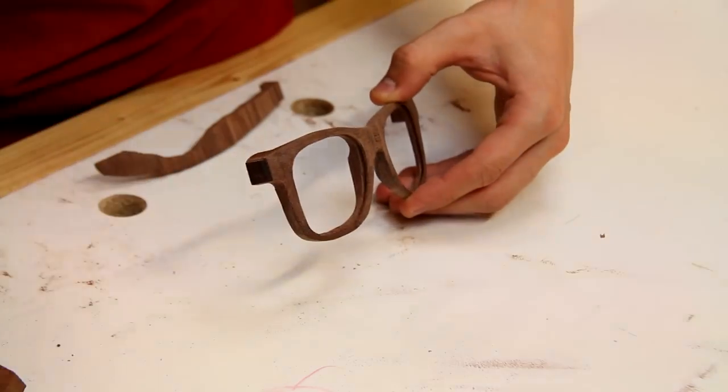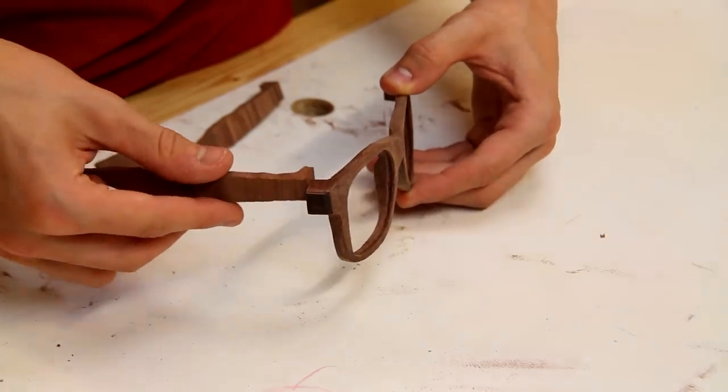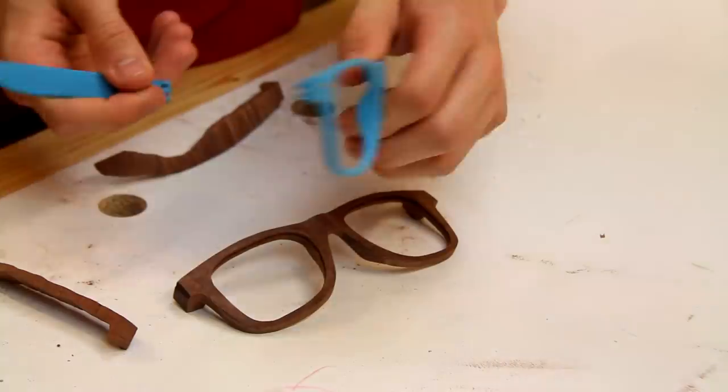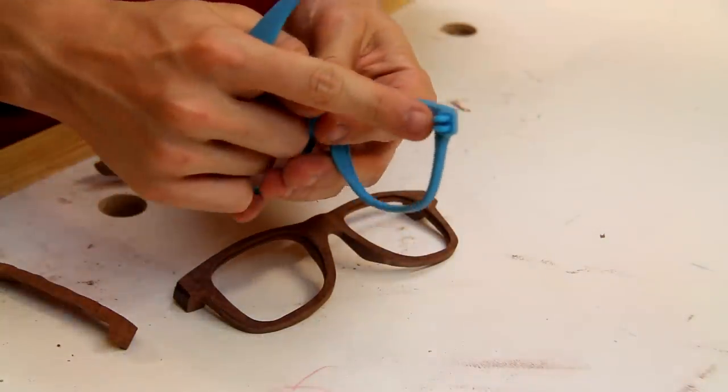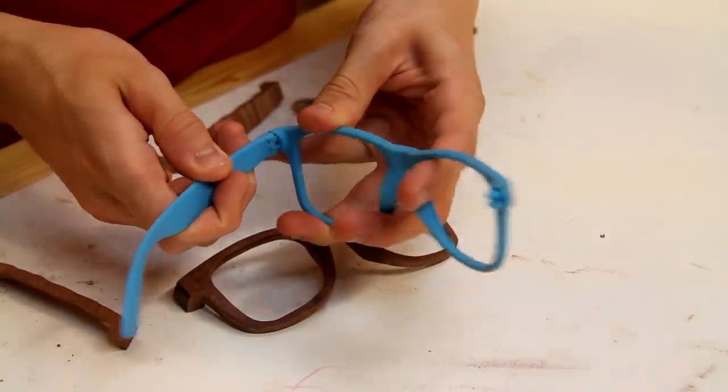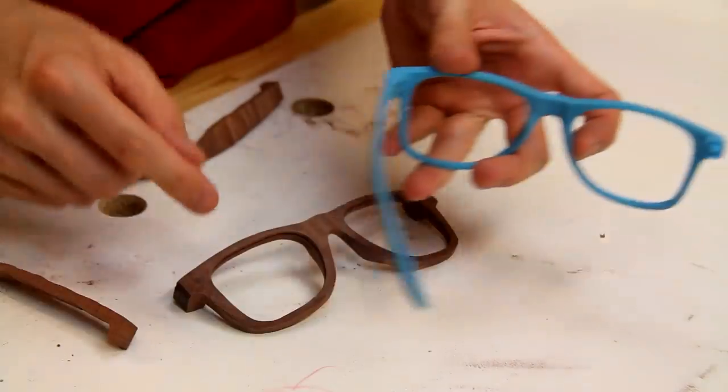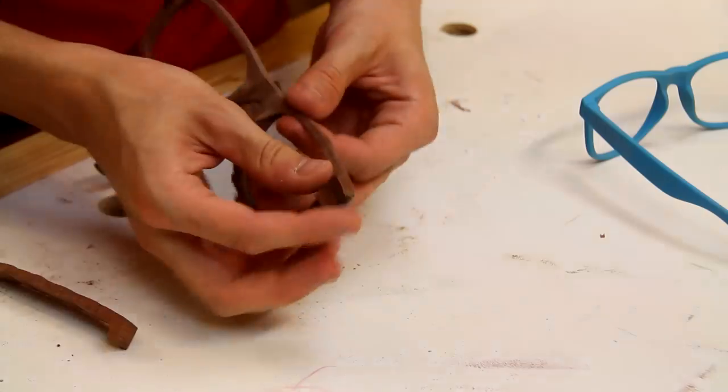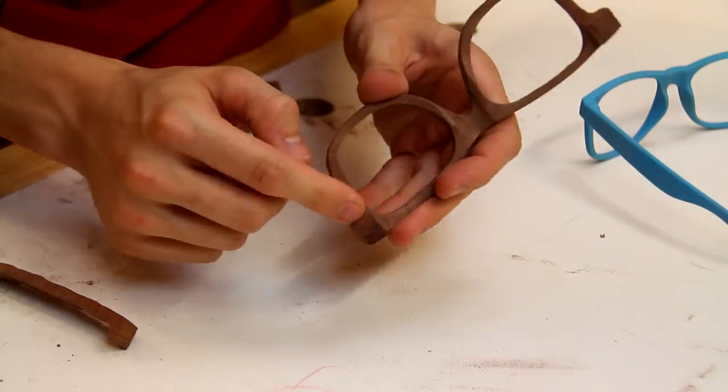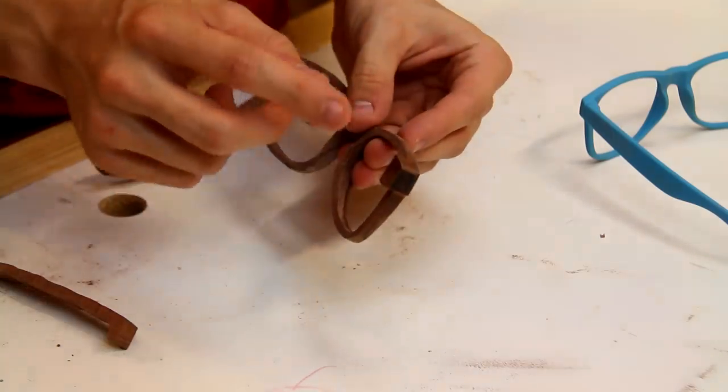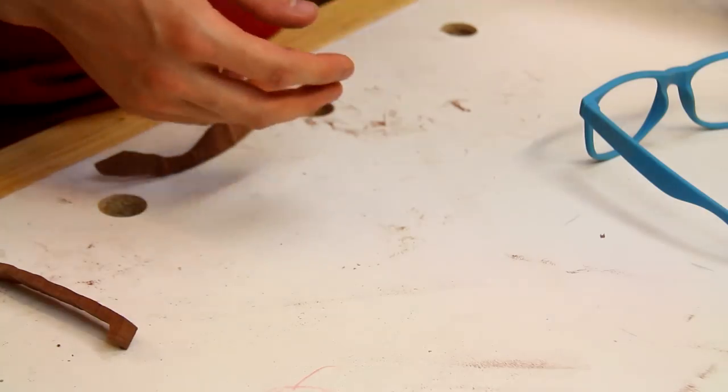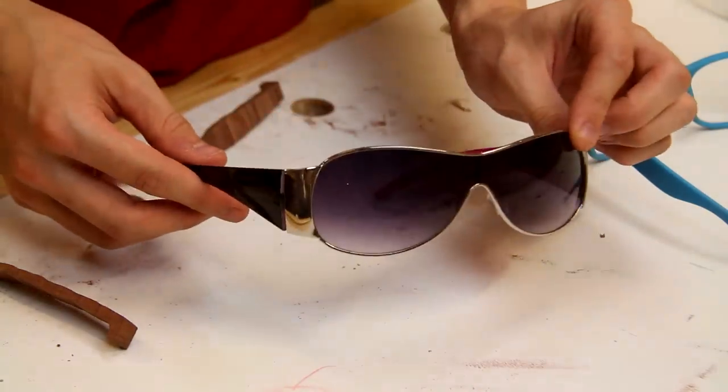The next thing that we need to work on is a way to allow the arms to hinge. Now on the original plastic sunglasses they had these little sort of pivots cut out and the arms just fit onto them like that. Now I did consider cutting out something very similar on here, which is why I've left such a big block on the end here to allow me to do that, but I can see that being very problematic.